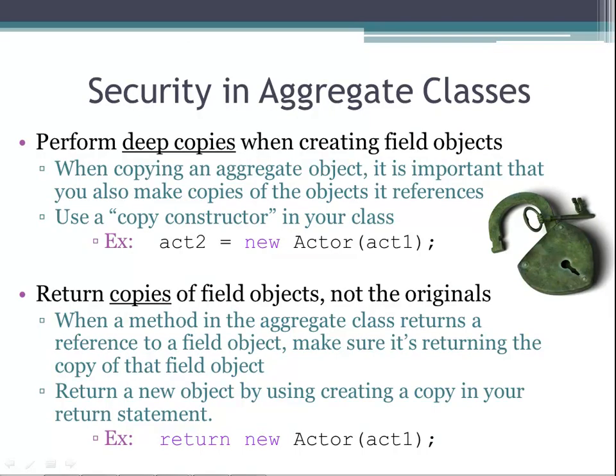You need to make sure that your aggregate classes are secured. To do so, perform deep copies when creating field objects. This means that when you copy an aggregate object, it is important that you also make copies of the objects that it references. Use a copy constructor in your class. In our example, we have our copy constructor actor which initializes act2 with the contents of act1. Also, make sure that you return copies of the field objects, not the originals. When a method in the aggregate class returns a reference to a field object, make sure it's returning a copy of that field object. Return a new object by creating a copy in your return statement — for example, return new actor(act1).